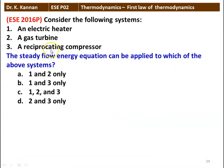Next question: consider the following systems — an electrical heater, a gas turbine, a reciprocating compressor. The steady flow energy equation can be applied to which? Options: 1 and 2, 1 and 3, 1-2-3, or 2 and 3. The answer is 1, 2, 3 — all the devices are eligible for application of the steady flow energy equation.